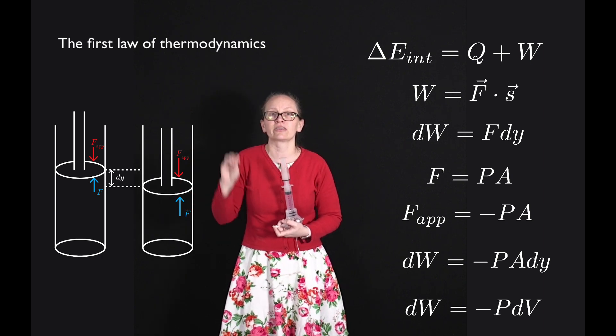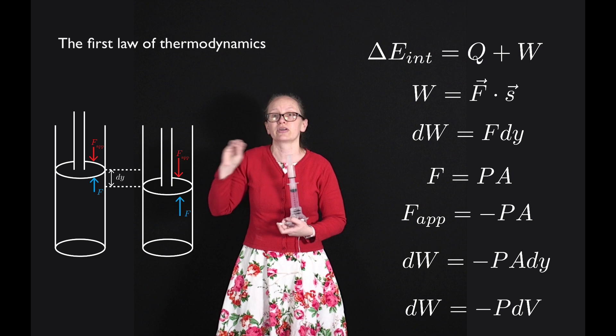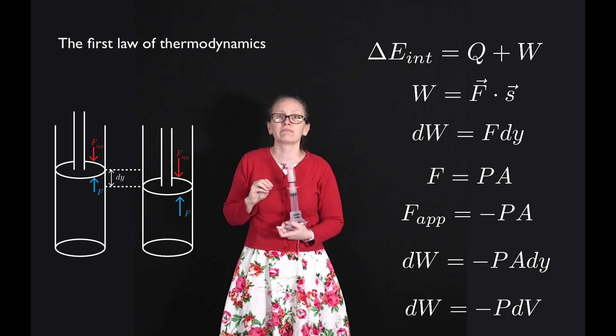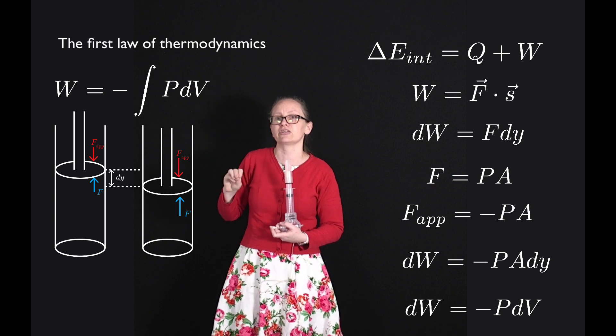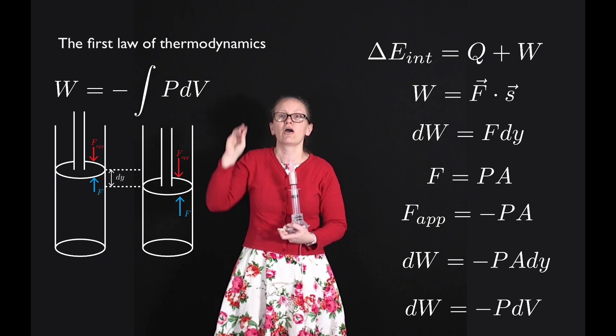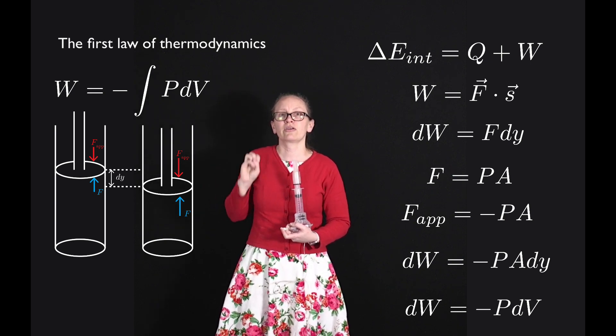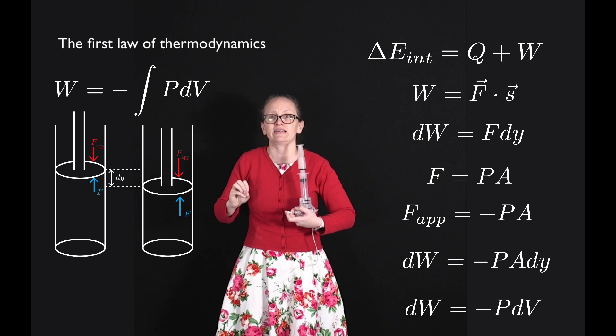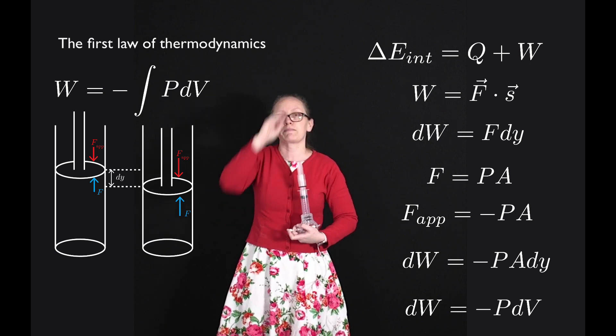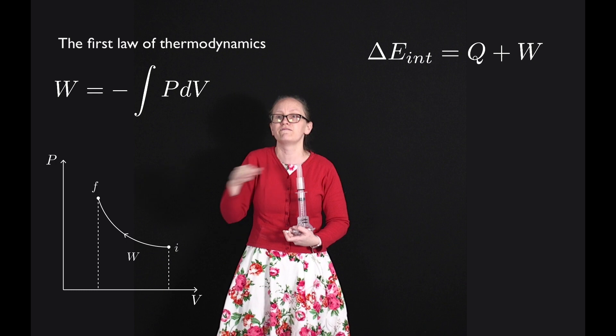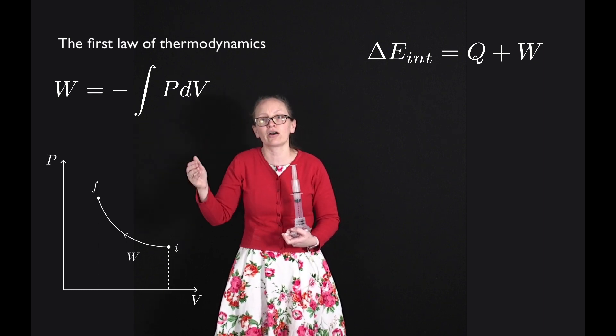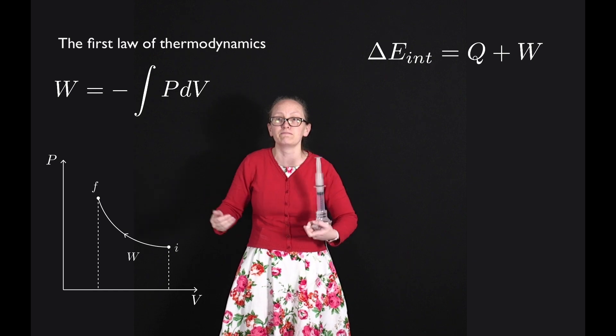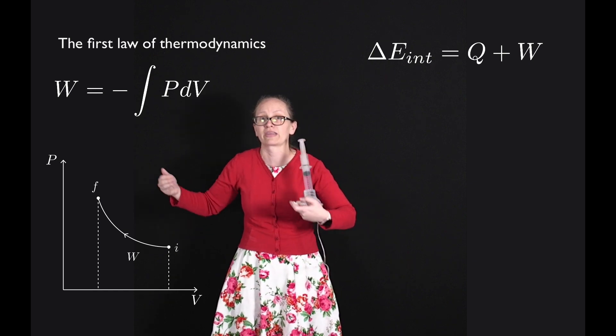So if I want to calculate the work with this equation, I'm going to need to integrate it. So I can write that the work done is equal to minus the integral from the initial volume to the final volume of P dV. So if I picture a plot with P along the y-axis and V along the x-axis, then the area under my curve is going to tell me about the amount of work done on the gas.